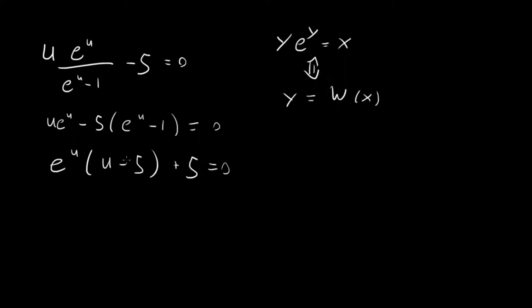So what can we do to try and make this look like that? We have u minus five. If we had a u minus five up here, then we would be set. So multiply both sides by e to the minus five. So we have u minus five times e to the u minus five equals minus five e to the minus five. We've just about got it. This is exactly in the same form.